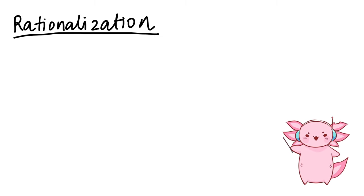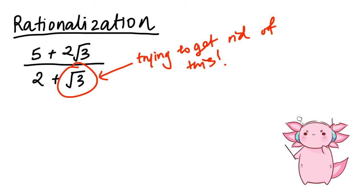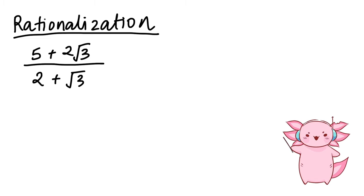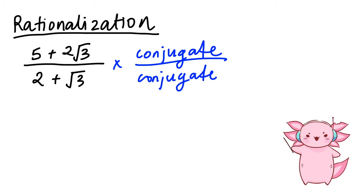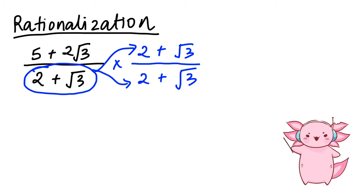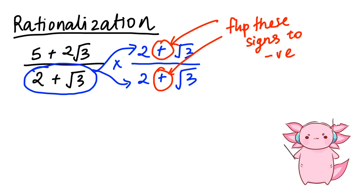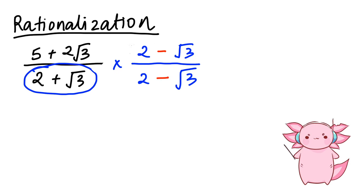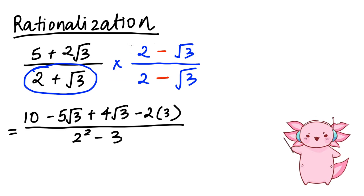Rationalization is trying to get rid of any square roots at the bottom of a fraction. We rationalize by multiplying the top and bottom by the conjugate — but importantly, we flip the sign of the square root, so 2 + √3 becomes 2 − √3. We multiply the two fractions, and the square root at the bottom disappears.